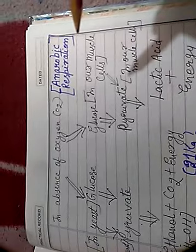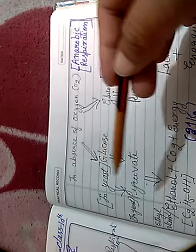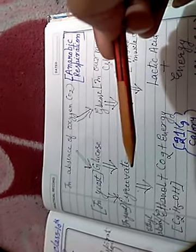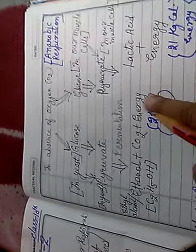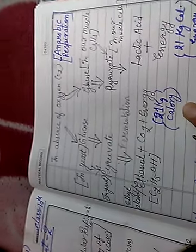When there is no oxygen, the process is called anaerobic respiration — oxidation of food in the absence of oxygen. This happens in two forms. In yeast (a type of fungus), glucose converts directly to pyruvate; then in the absence of oxygen, fermentation occurs, producing ethanol (C₂H₅OH, ethyl alcohol) plus carbon dioxide plus only 21 kilocalories of energy.